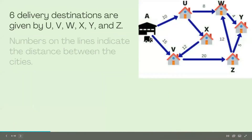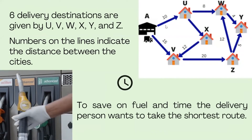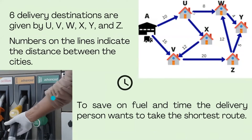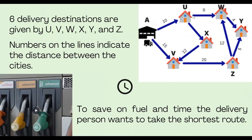Here you can see a diagram. There are six delivery destinations. There is a vehicle and point A is the warehouse. The destinations are U, V, W, X, Y, Z.